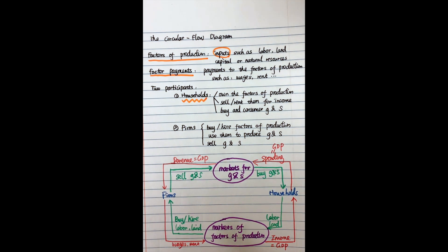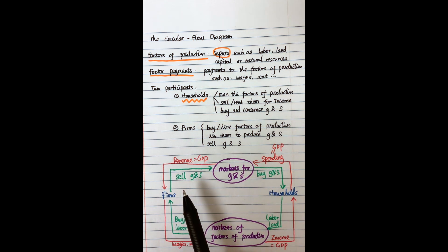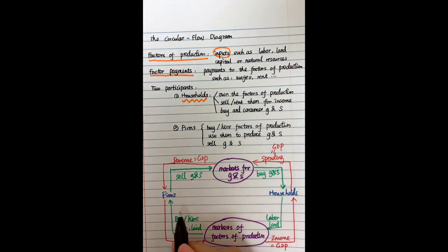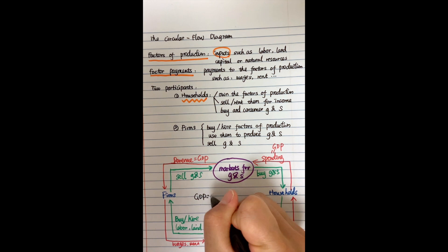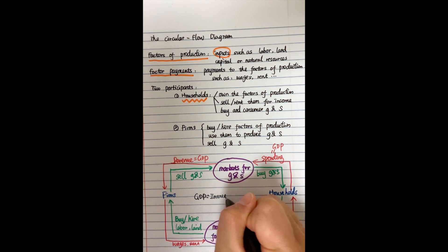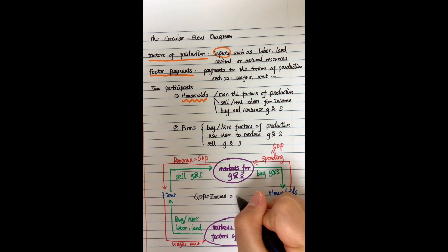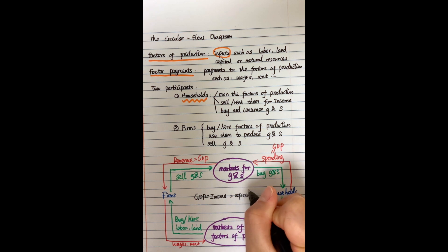From this simple circular flow diagram, we can notice that GDP equals income, equals expenditure.